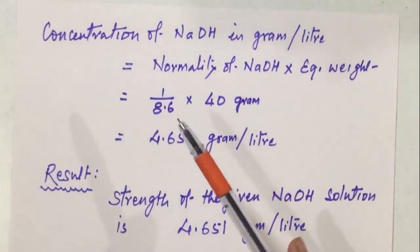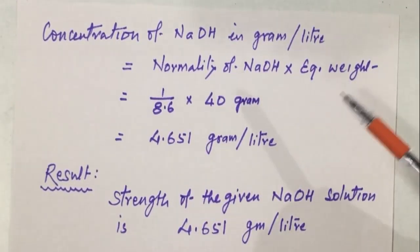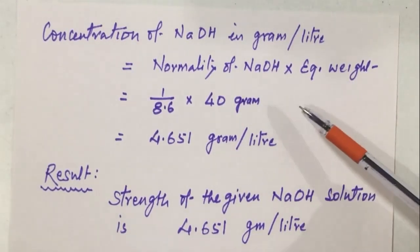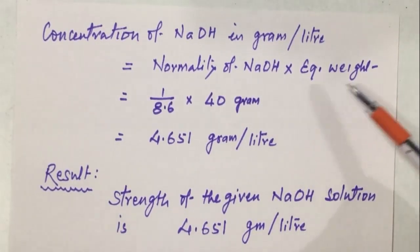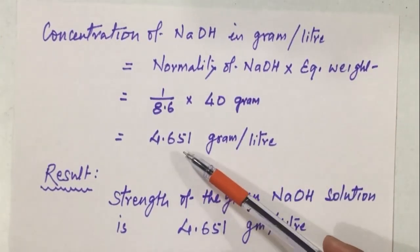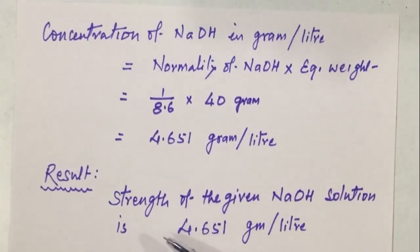Now we can calculate the concentration of NaOH in gram per liter in this manner. Concentration of NaOH in gram per liter equals normality of NaOH into equivalent weight of NaOH. By putting all these values, we get concentration of NaOH equal to 4.651 gram per liter. And this is our final result. Strength of the given NaOH solution is 4.651 gram per liter.